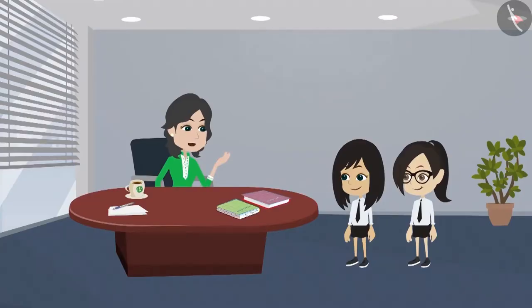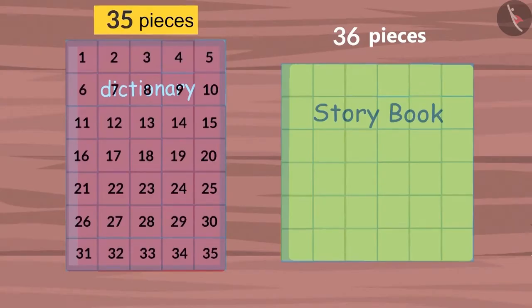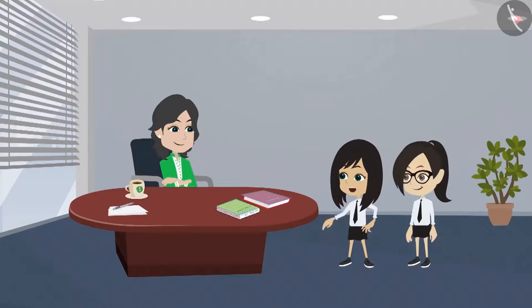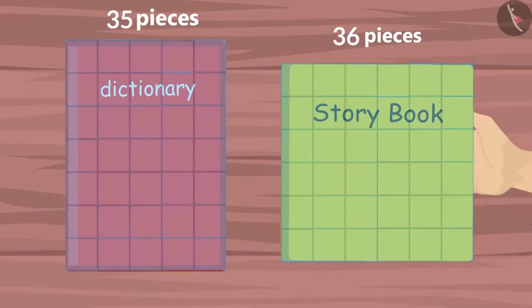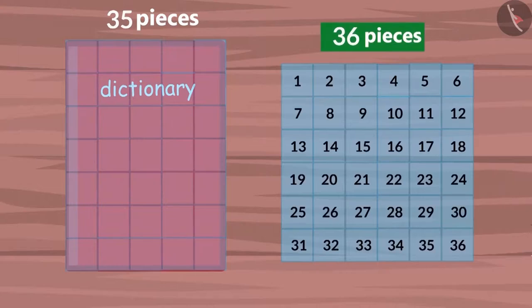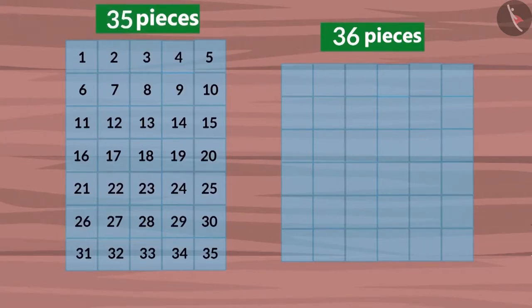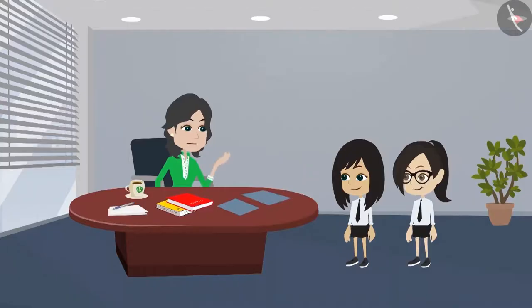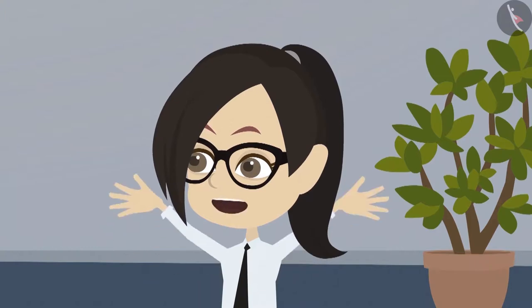Now, tell me whose book required more pieces to cover? Madam, 35 pieces were used to cover my book, whereas 36 pieces were required to cover Neha's book. That means, Madam, more pieces were required to cover my book. So, does this mean that Neha's book is bigger than mine? Yes, because Neha's book will occupy as much space as 36 pieces, and your book will occupy as much space as 35 pieces. This means that Neha's book occupies more space than your book. That means, Neha's book is bigger. Now I understand why we can say that Neha's book is bigger than my book.